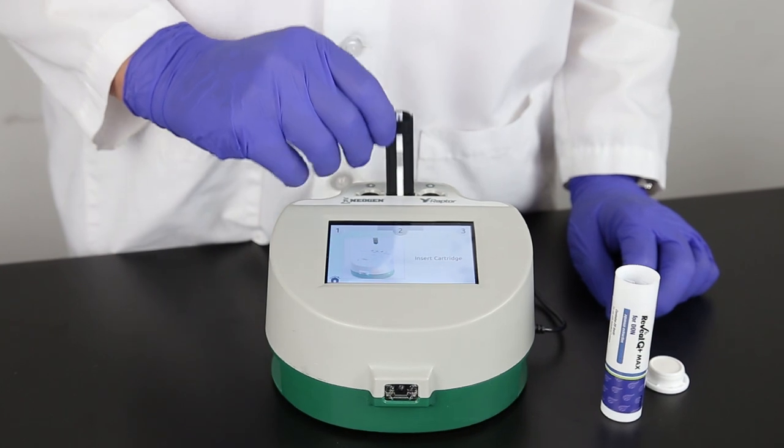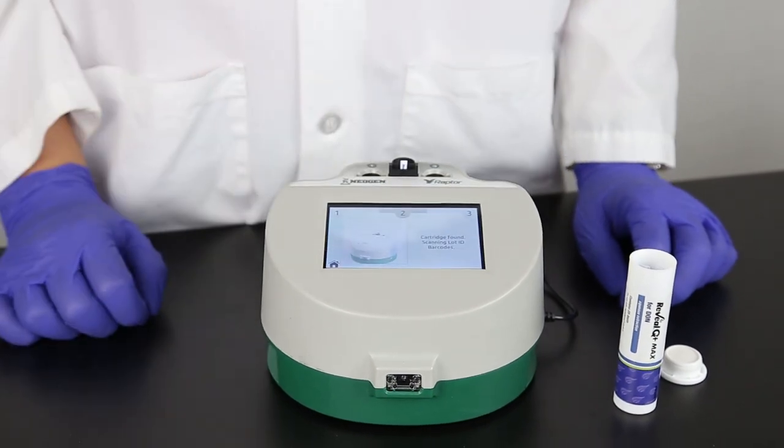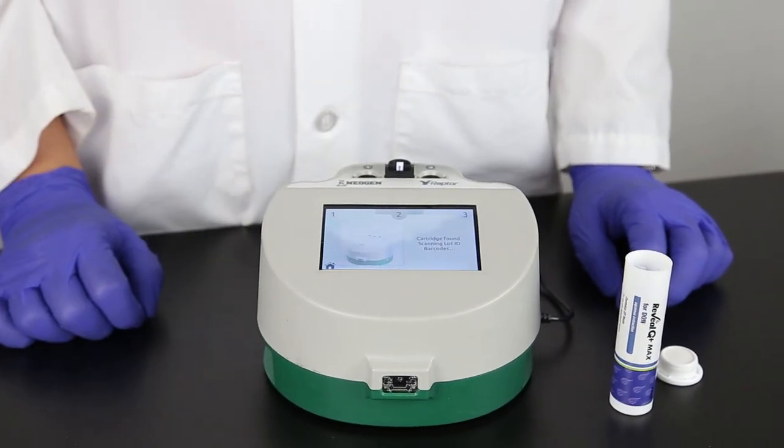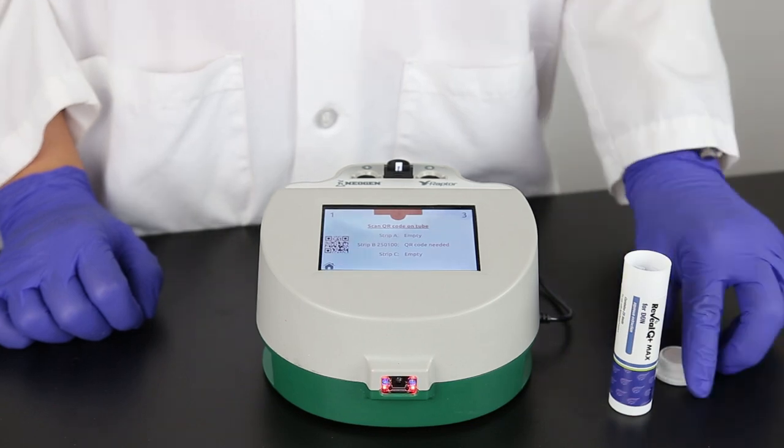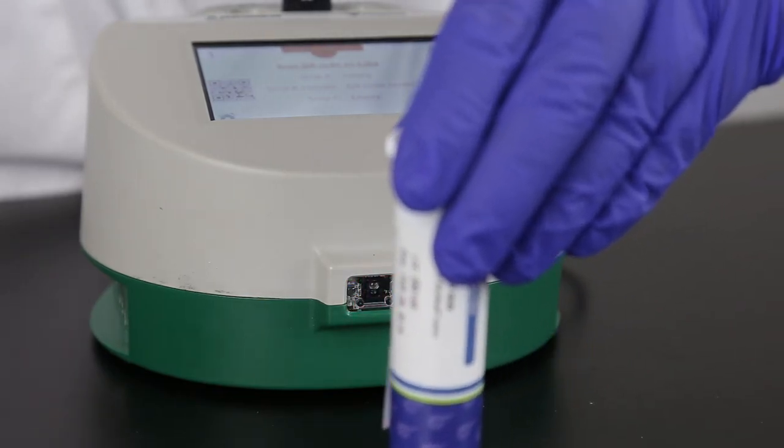You can use any of the three ports. The Raptor system reads the barcode on the strip. If you need to add the lot information to the system, the scanner on the front of the system will turn on automatically. Scan the QR code located on the strip tube.